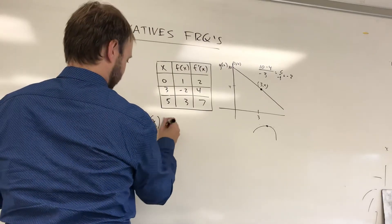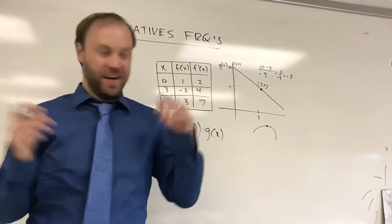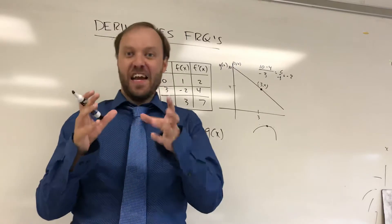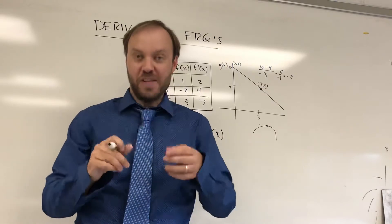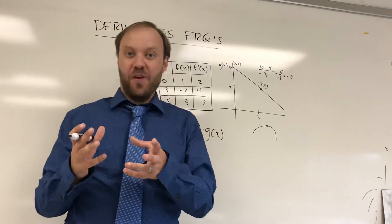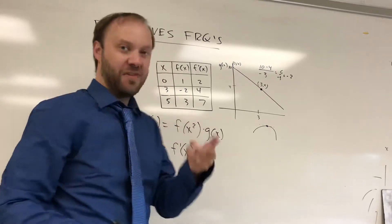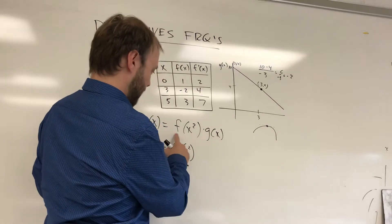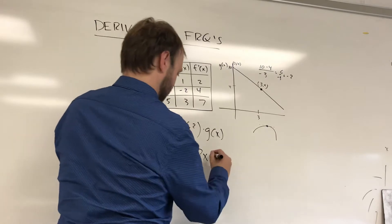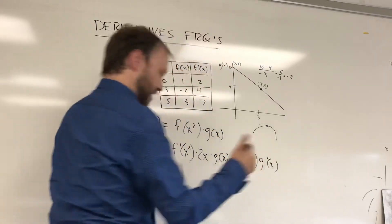Another example: they could define h of x as f of x squared times g of x. Again, it's a product rule — you need to apply the product rule. The derivative of the first term: be careful here. Think about the chain rule. If I had sine of 2x, you take the derivative of the outside function, the inside function doesn't change. Same thing here: derivative of the outside is f prime, inside function doesn't change, but you multiply by the derivative of the inside function. So that gives you the derivative of the first term, times the second, plus the first term times the derivative of the second.